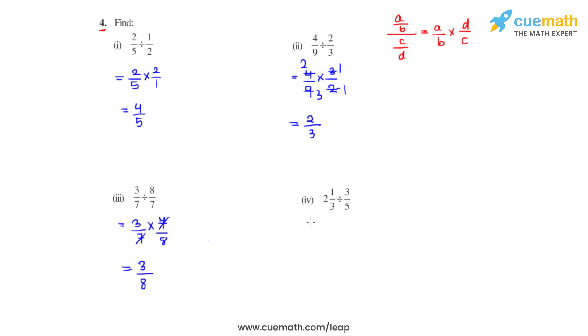Coming to the fourth bit, we have a mixed fraction, so we'll convert that into an improper fraction. 3×2 is 6, 6+1 is 7. So it's 7/2 multiplied with the reciprocal of the other fraction, that is 5/3, and that gives us the answer as 35/9. Now we'll go on to the next set of bits.